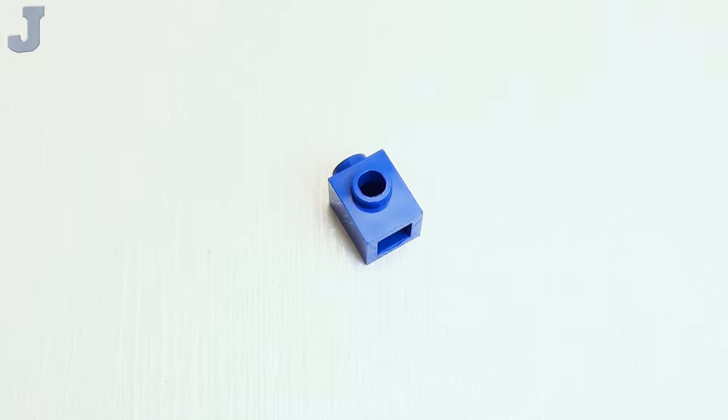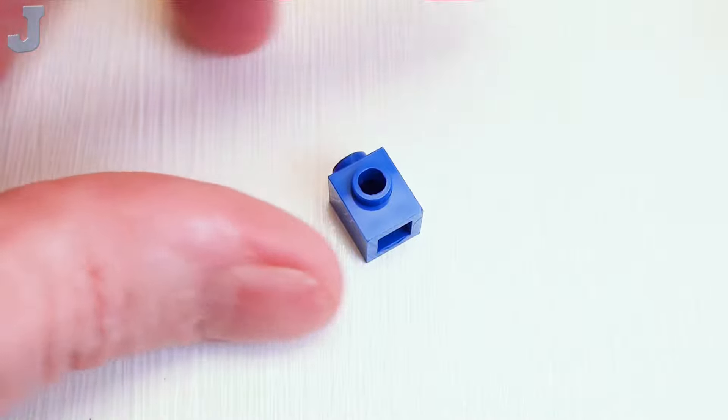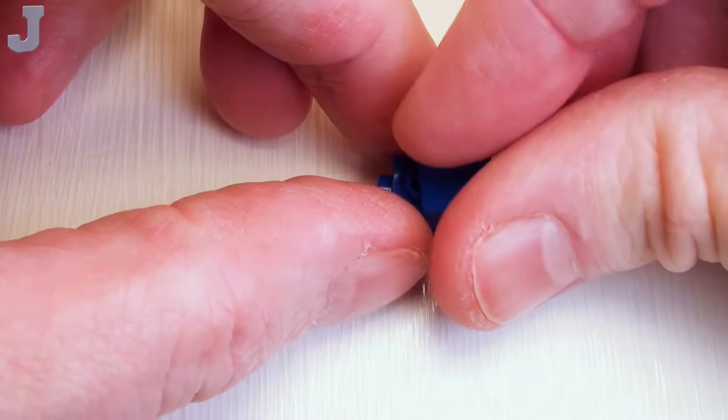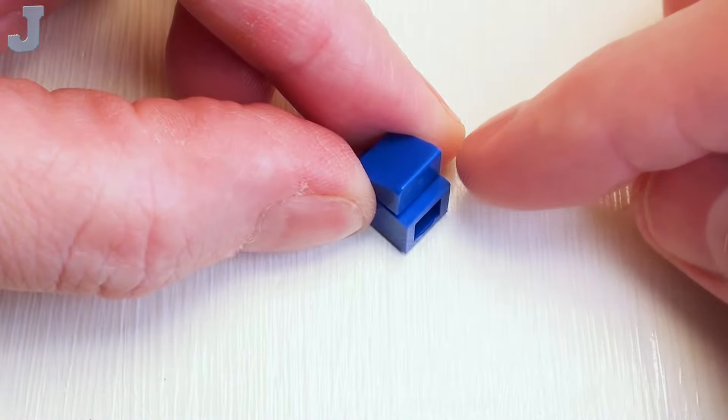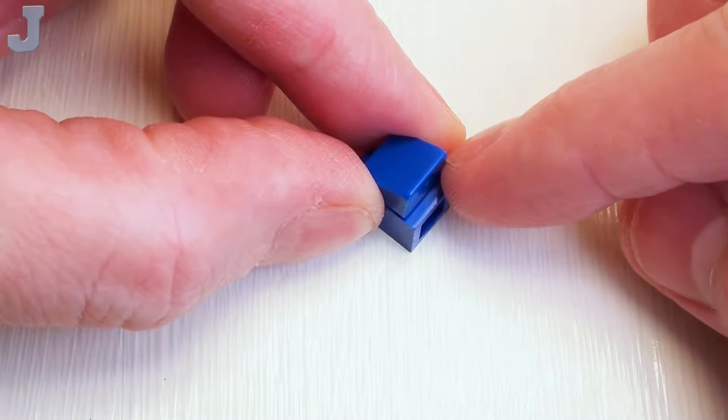For the front part of our arrow sign, take a 1 by 1 brick with one stud. I'm going to place a 1 by 1 by 2 thirds slope where the larger portion of the slope is facing the bottom.